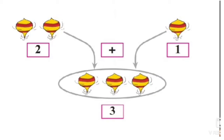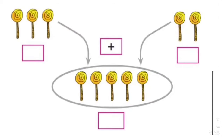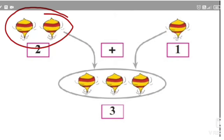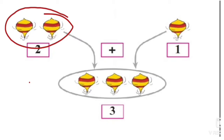So dear students, how many tops are there in this picture? There are two tops, and the number two is written below the two tops. We have to add — the plus sign is written here. It is very important to write the plus sign, or the symbol of addition, when we are doing addition.